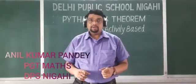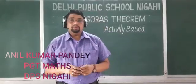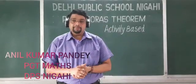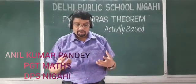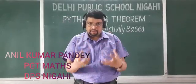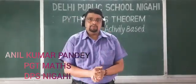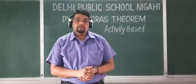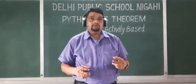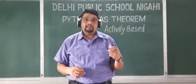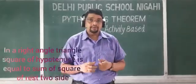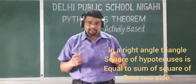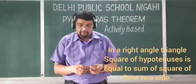Good morning students. Today I am going to tell you the Pythagoras theorem with the help of very small techniques which you can do at home. As you know, the Pythagoras theorem states that in a right angle triangle, the square of the hypotenuse is equal to the sum of squares of the rest of the sides.